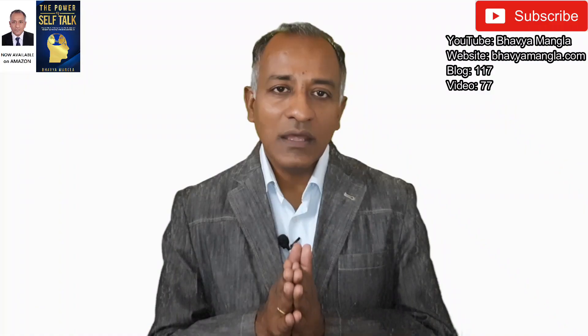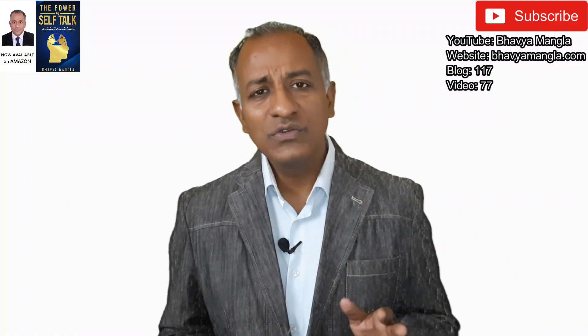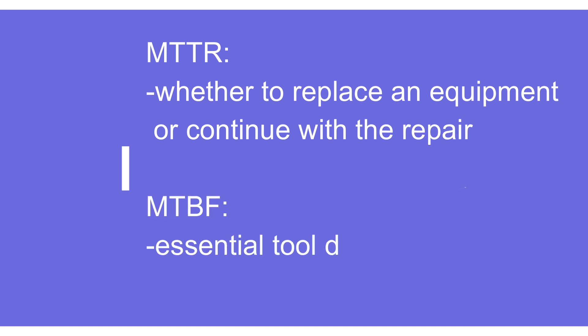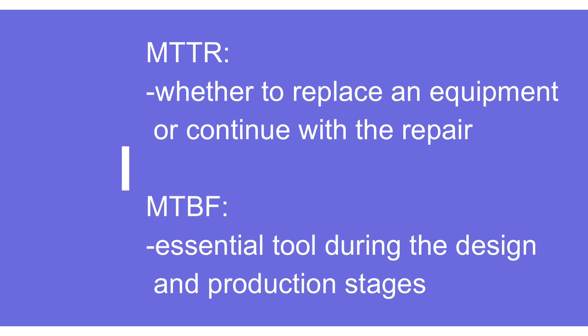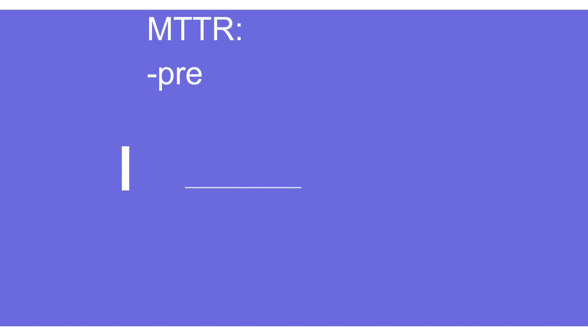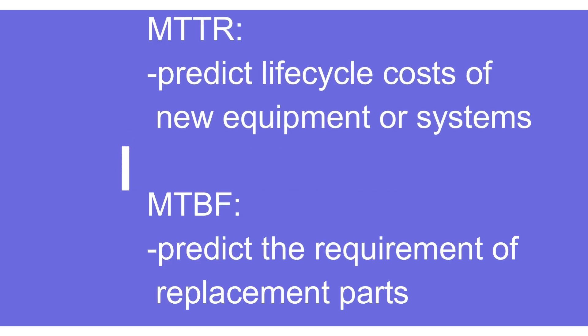MTTR helps us decide whether to replace a particular equipment that is taking a lot of time to repair or to continue repairing it. MTBF is a tool indicator that supports the design process and production decisions — helping to determine what needs to be done. MTTR also helps predict the life cycle cost of a new equipment or system, while MTBF helps predict the requirement and frequency of replacement parts.